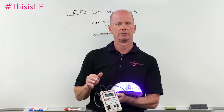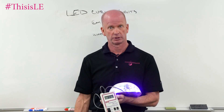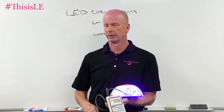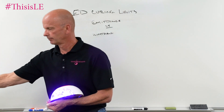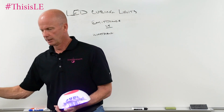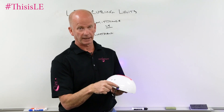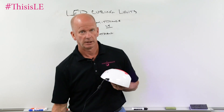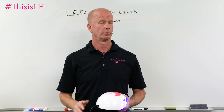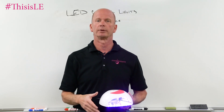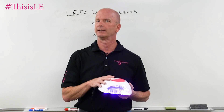If we can convert the energy losses — in the connection at the back of the light, in the cord, and in the AC-DC adapter — so that we have no energy loss at those points, even without changing anything inside the curing light, we'll probably get an even higher emittance value.